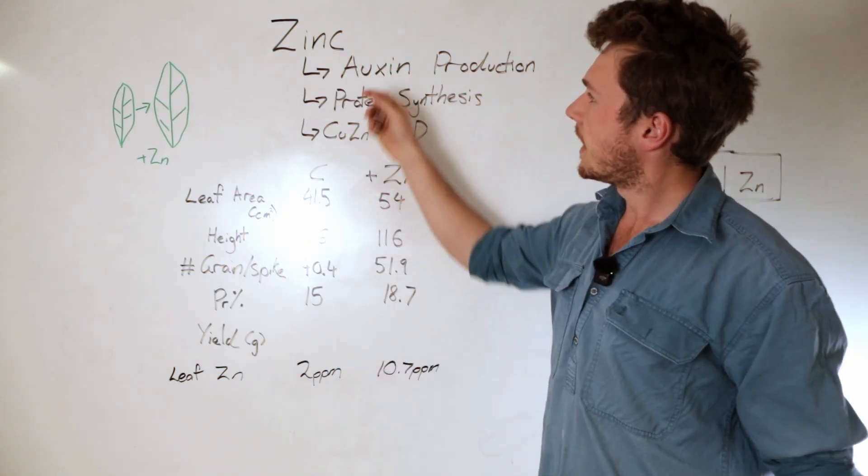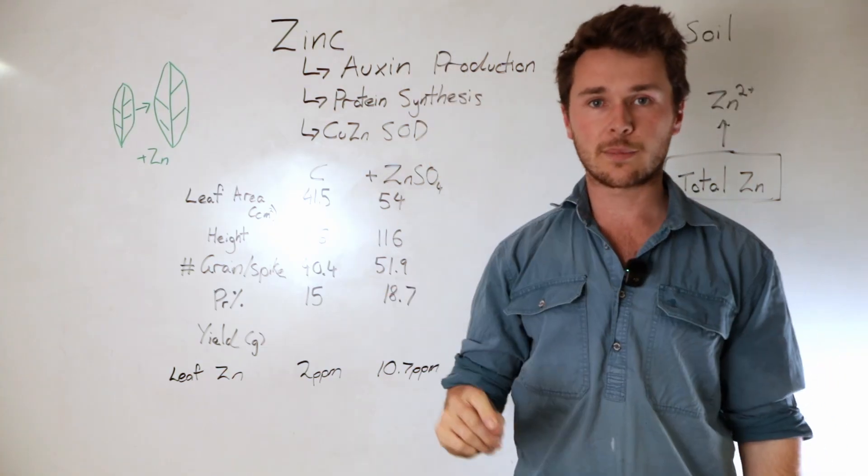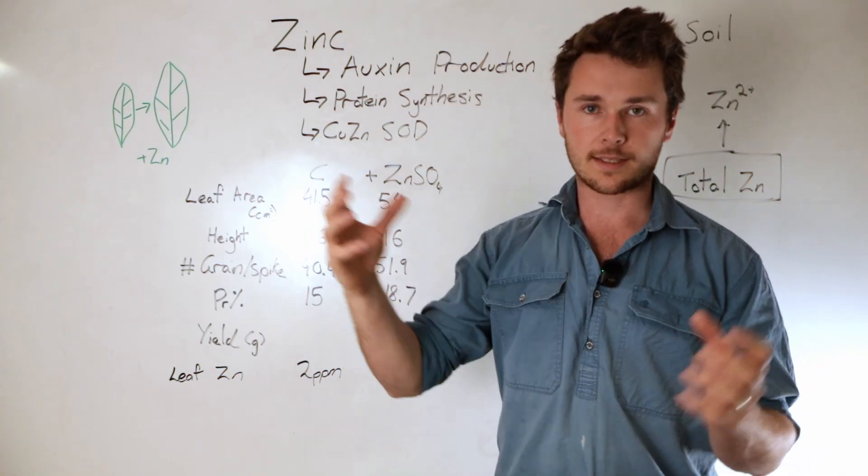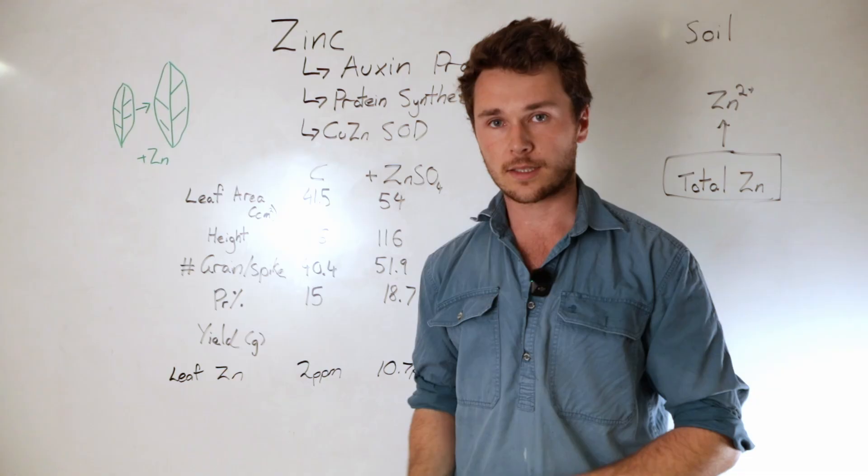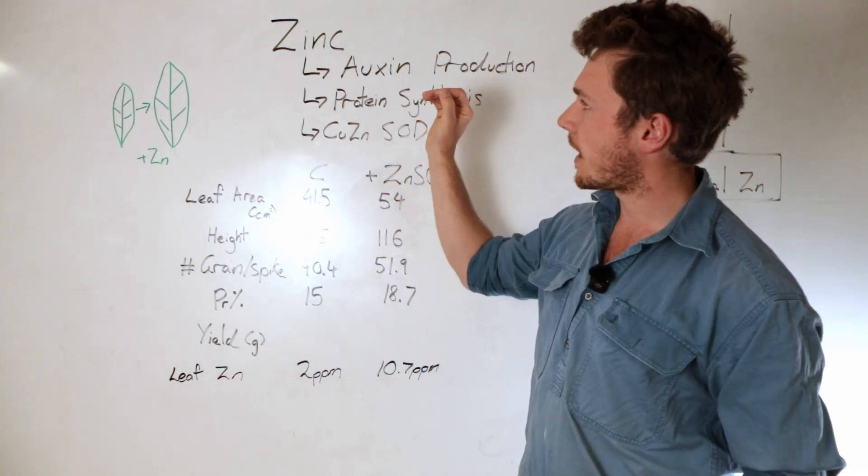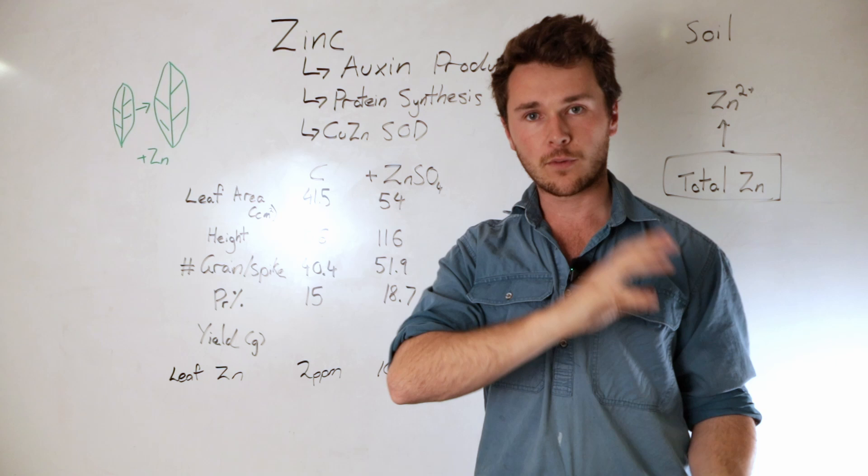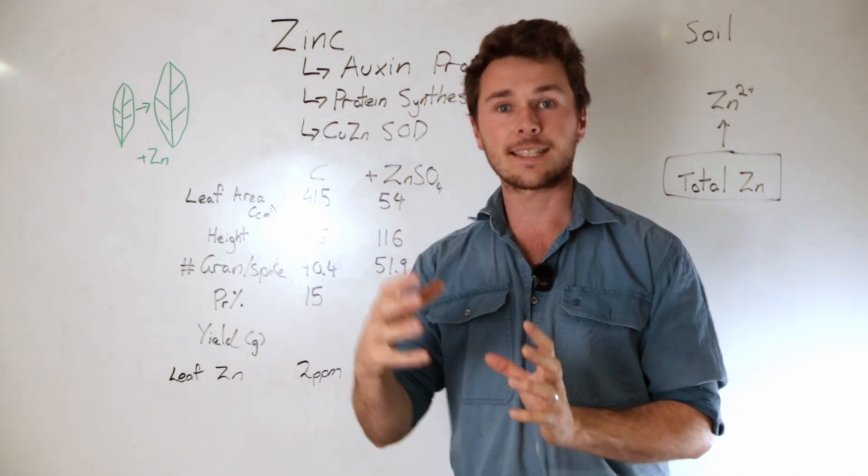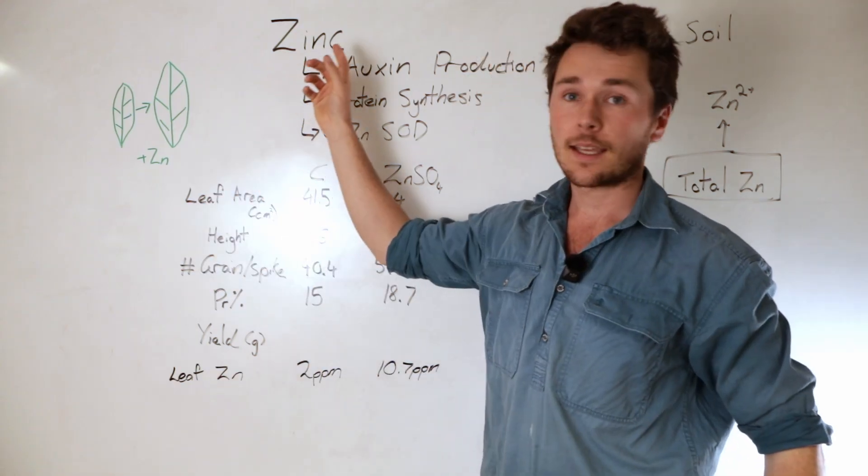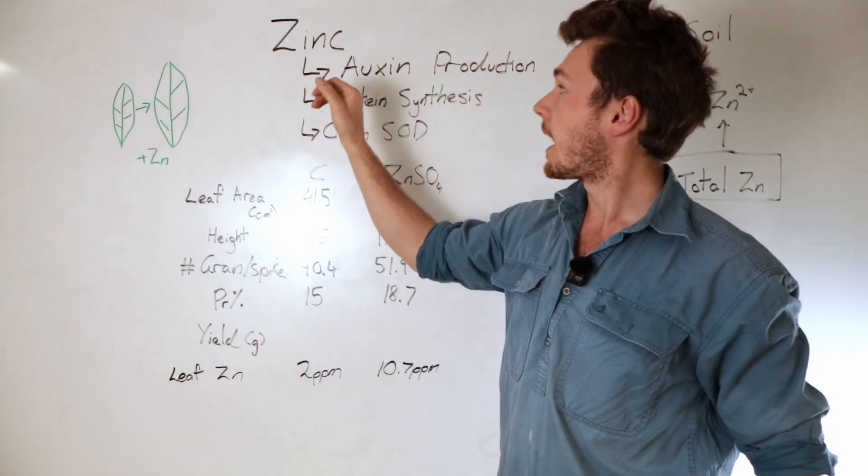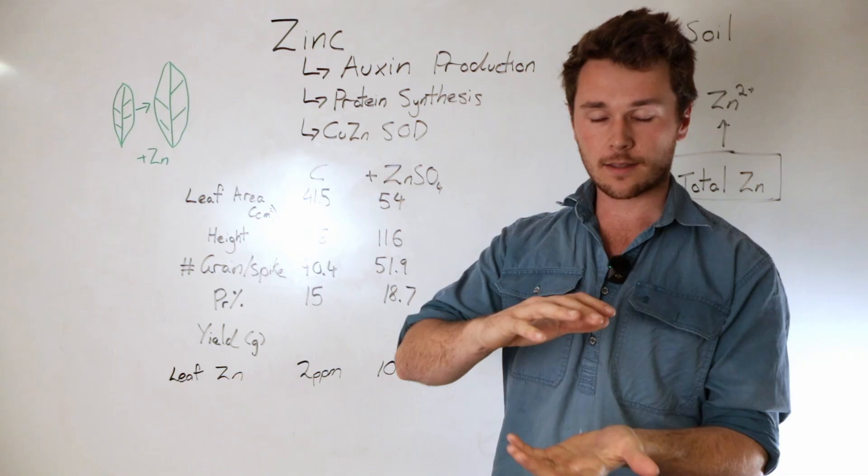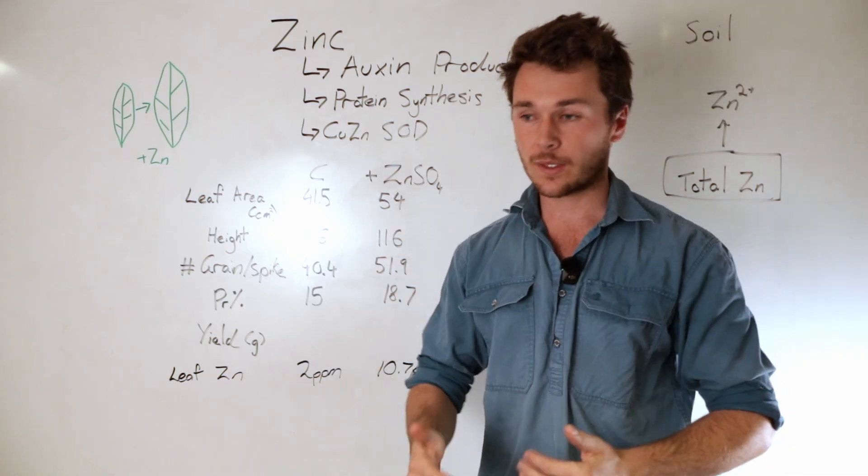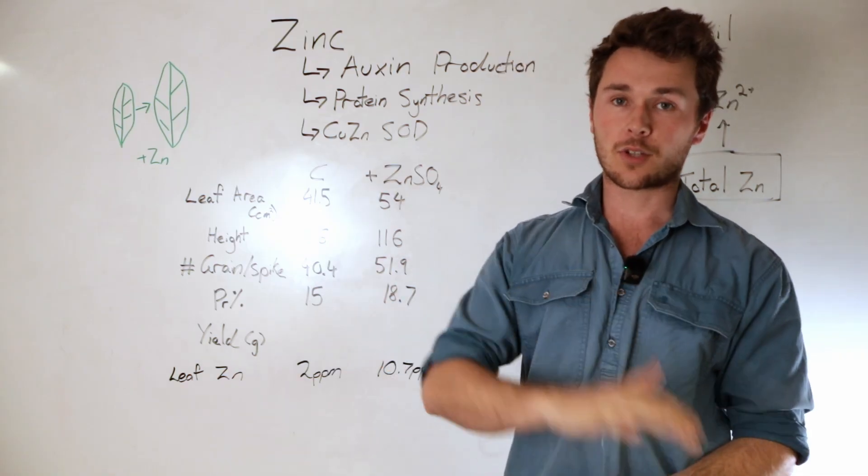Next we have protein synthesis. Zinc is required in the ribosome which takes the amino acids and puts them together into proteins. When we convert all our ammonium into amino acids and we're going to convert these amino acids into complete proteins, we need zinc as well as magnesium. When we don't have zinc we can't convert those amino acids into proteins, which means we get a buildup which attracts pests and disease.